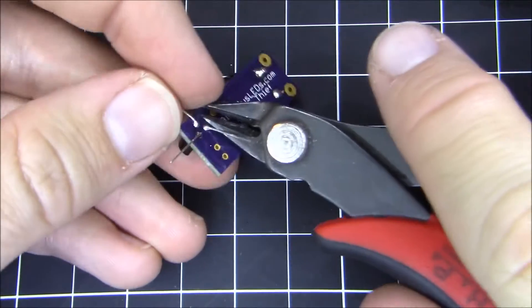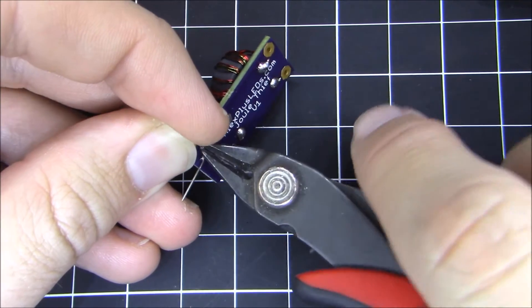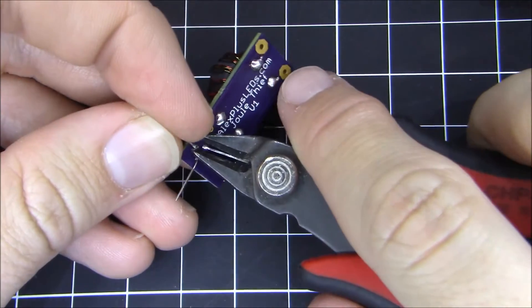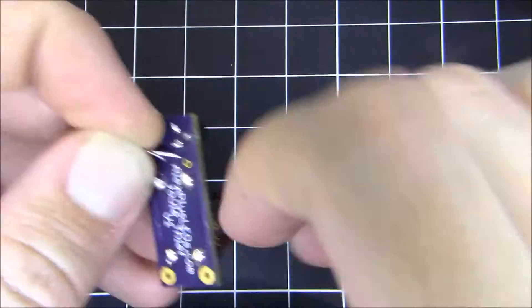And once that's done, we're going to trim off the leads with the wire cutters to make sure that nothing gets shorted out. So there's all three leads trimmed.